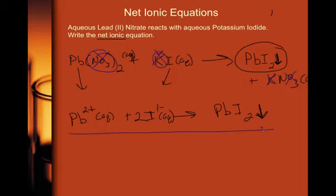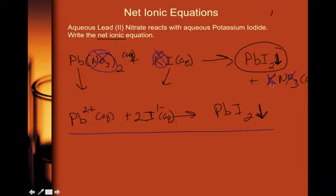If asked to write the complete ionic equation, you would write Pb²⁺ (aq) plus NO3⁻ (aq) plus I⁻ (aq) plus K⁺ (aq) making the lead iodide precipitate, plus K⁺ (aq) plus NO3⁻ (aq) — without crossing out the spectator ions. That is how you do net ionic equations.